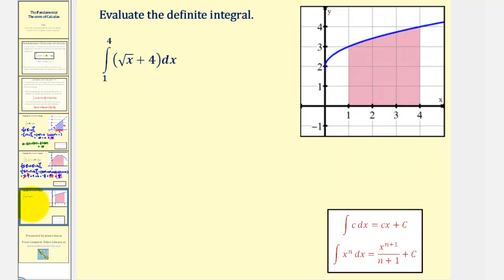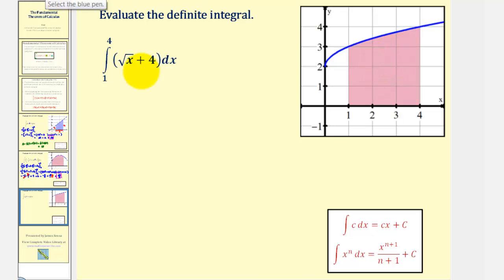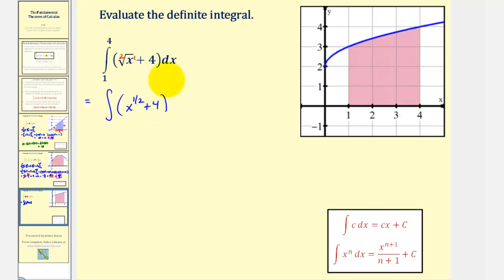Let's take a look at one more example. We want to find the definite integral of the square root of x plus four, integrated with respect to x from one to four. Notice how the integrand function is non-negative on this closed interval, so the definite integral is equal to this area here. Before we find the anti-derivative, we want to write the square root of x using rational exponents, so we can write this as the integral of x to the one-half plus four, with respect to x from one to four.